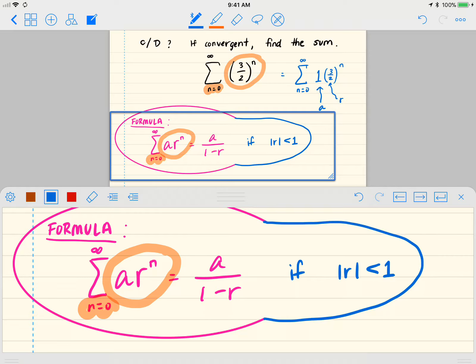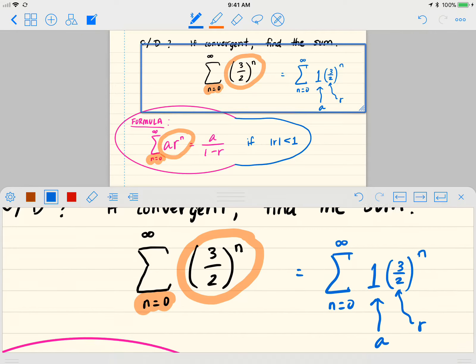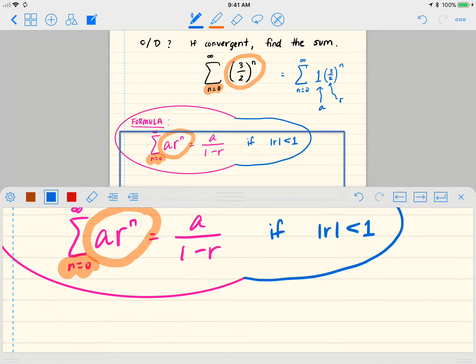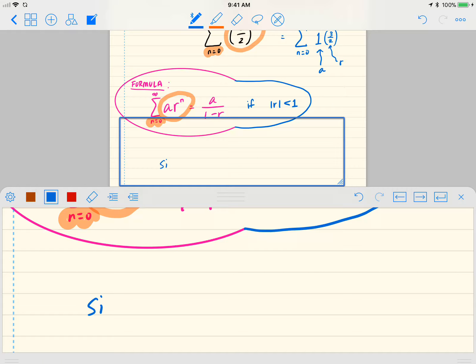Okay, so r is equal to three halves. So do you see that a is one, r is three halves. So now look, since r is equal to three halves, the absolute value of r is not less than one, right? Because the absolute value of r is just going to be three halves, which is bigger than one.